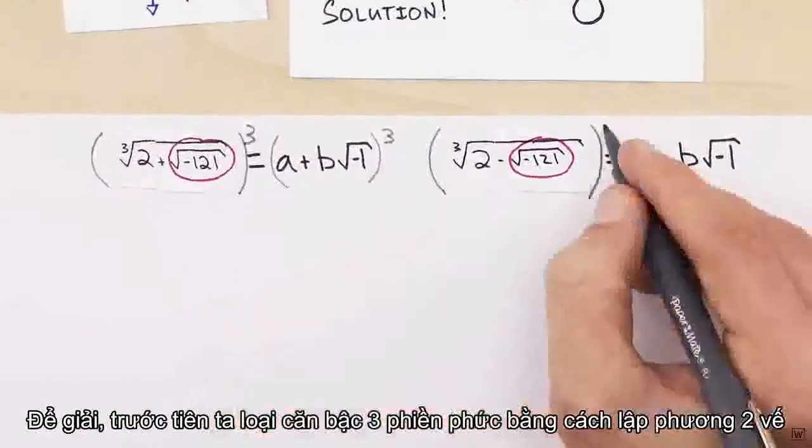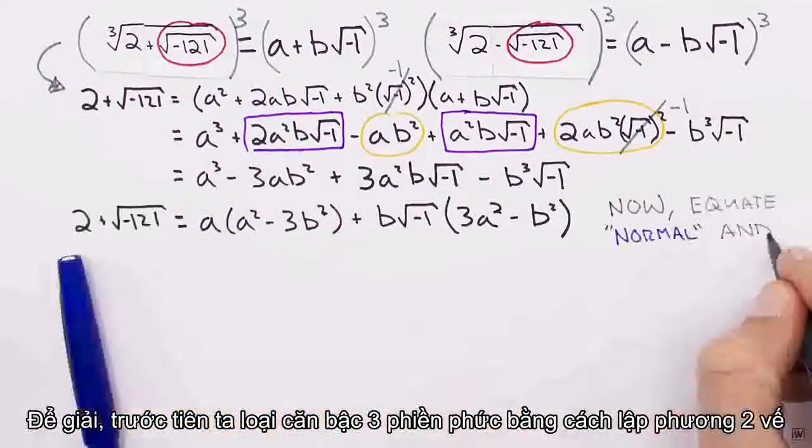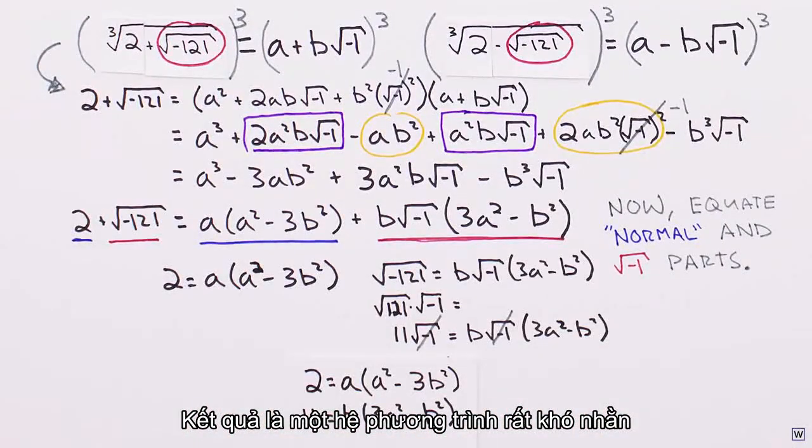To solve, we can first eliminate that annoying cubed root by cubing both sides. The result is a particularly tough system of equations.